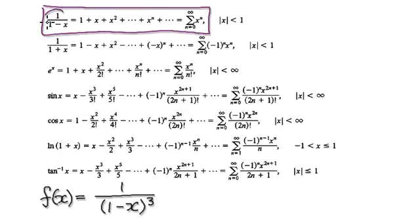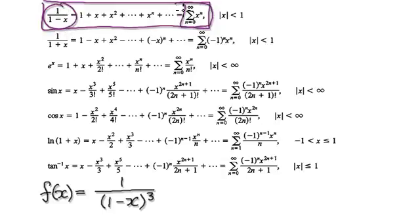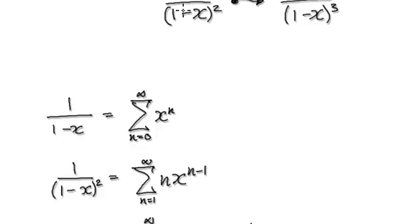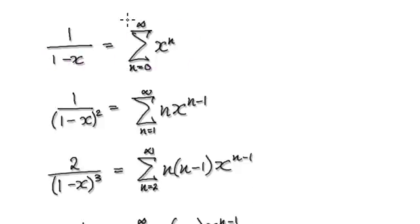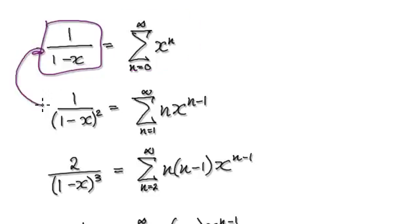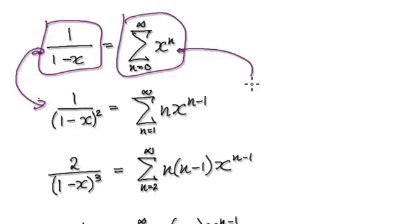So 1 over (1 minus x) equals this series. Start out with this. Differentiate this — that will give you this. Differentiate this again — that will give you this.